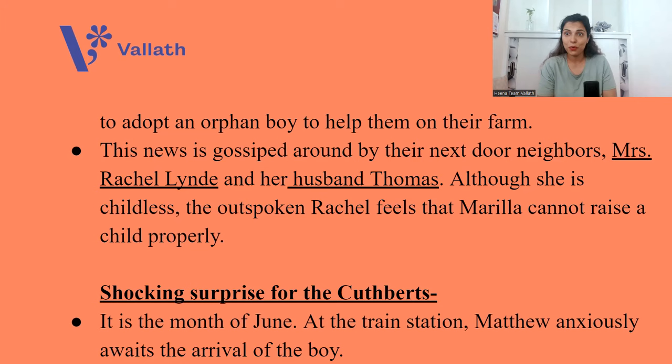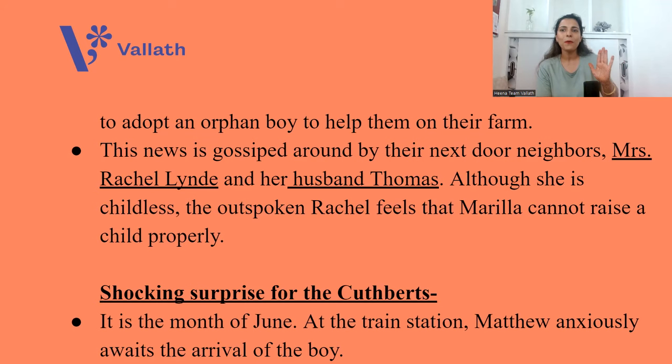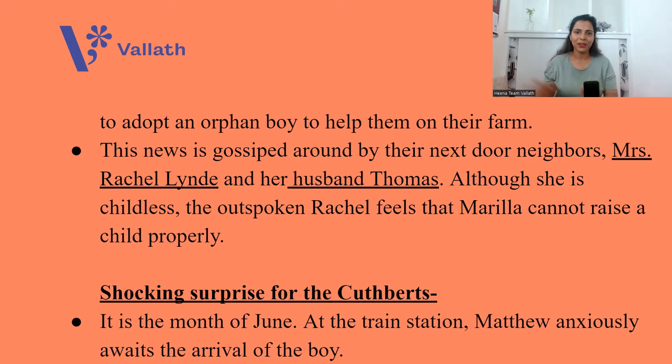This news is gossiped around by their next-door neighbors — Mrs. Rachel Lind and her husband Thomas. Mrs. Rachel is actually a gossip monger. She herself is childless, but she's very outspoken, constantly telling Marilla how to raise a child and warning that she will just fail as a parent.